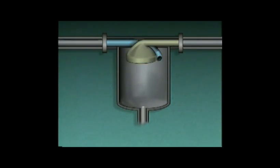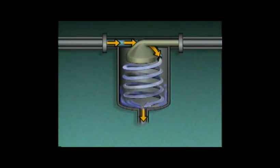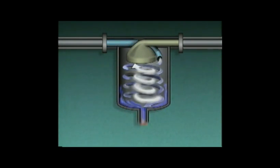As moist gas enters the demister, it begins spinning. Because liquids are heavier than gases, centrifugal force causes liquid to separate from the gas and hit the shell. The liquid runs down the shell and out through the liquid outlet, while the gas enters the collector and leaves through the gas outlet.